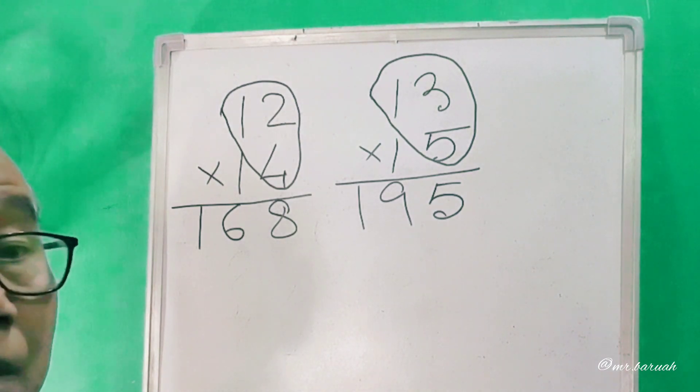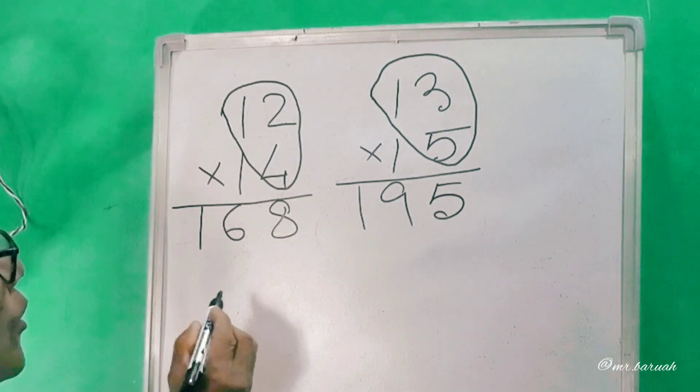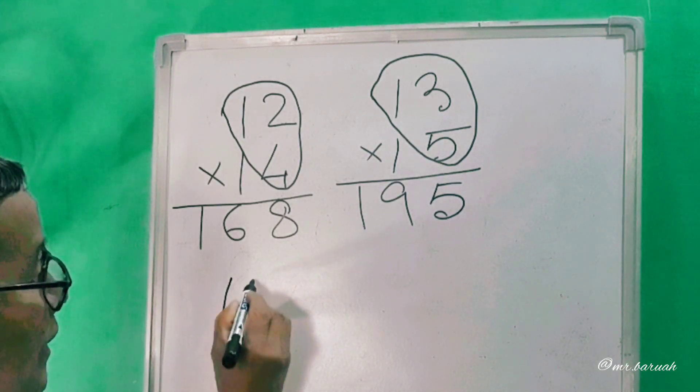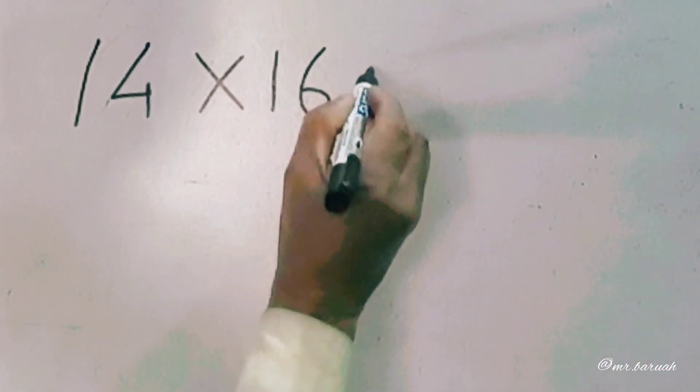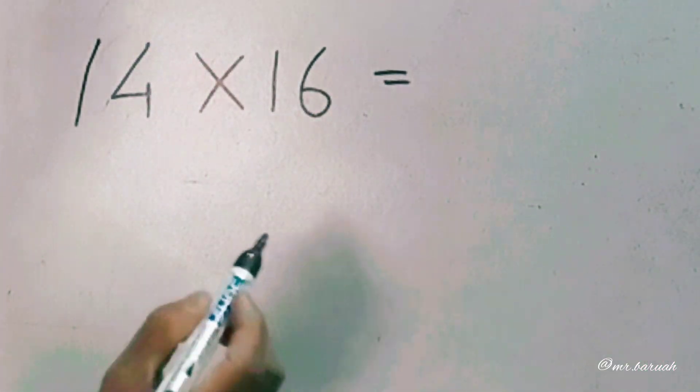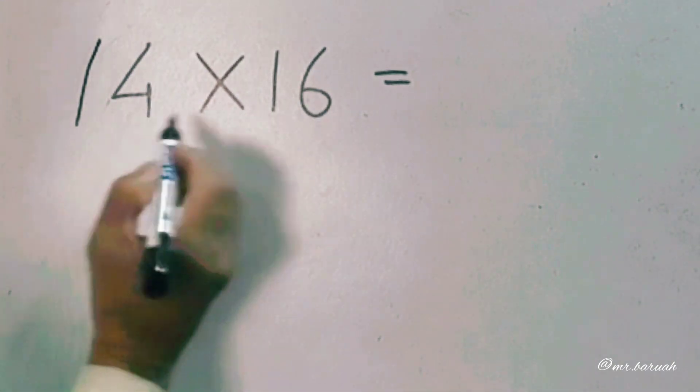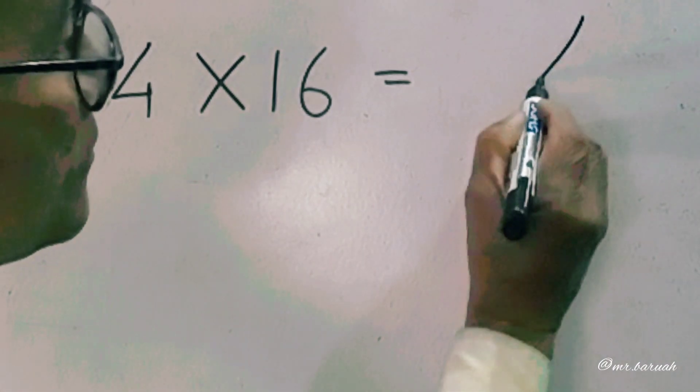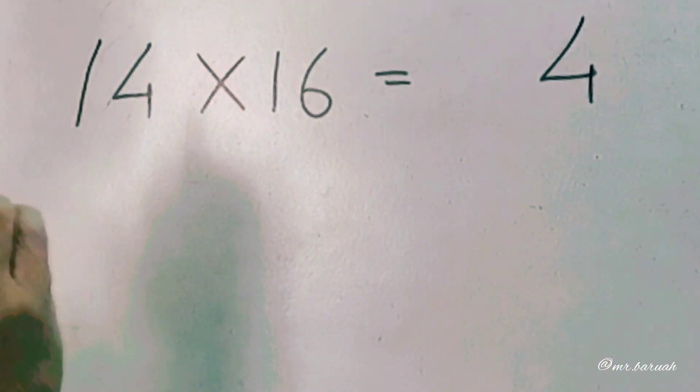The first step is 14 into 16. 14 into 16 equals... First time, 6 into 4. 6 into 4 is 24, so 4, 2 in hand.